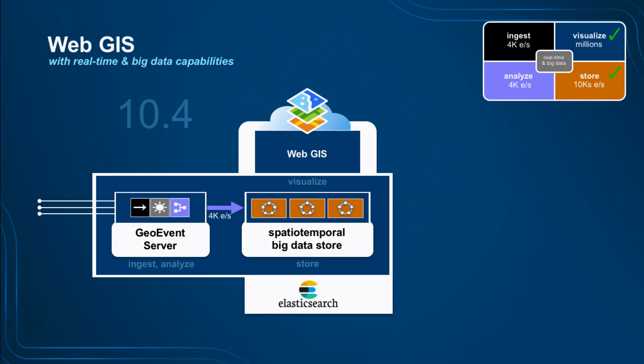With the Spatial Temporal Data Store introduced at 10.4, we were able to sustain the rates that GeoEvent can produce. We've benchmarked a two- or three-node cluster to do about 100,000 writes per second, so we're not even nearly peaking where it gets constrained. Fundamentally, the Spatial Temporal Big Data Store is Elasticsearch underneath. We've written a bunch of extensions and plugins for Elasticsearch that make it perform faster and work better with spatial data, which we'll go through in this talk.